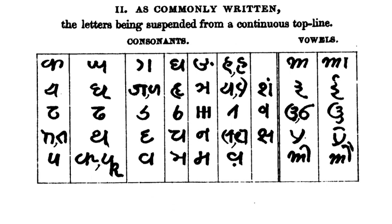Documents in Kaithi are traceable to at least the 16th century. The script was widely used during the Mughal period. In the 1880s, during the British Raj, the script was recognized as the official script of the law courts of Bihar.